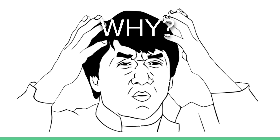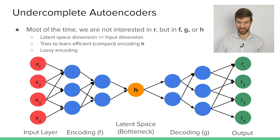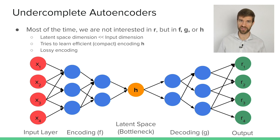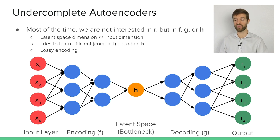Why would anyone want to do this? If we already know x, why spend resources getting something we already have? Well, because there are some really cool things we can do with this basic idea. What we usually have with autoencoders are so-called undercomplete autoencoders. Most of the time, we're not interested in the reconstruction r because we already have x. So we have to be interested in something else — it could be the latent space representation in the middle, or the function f or function g.